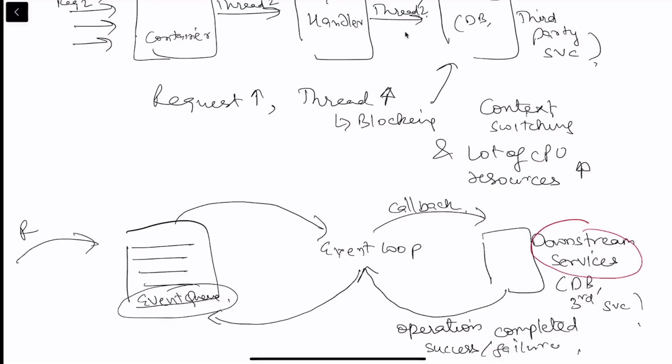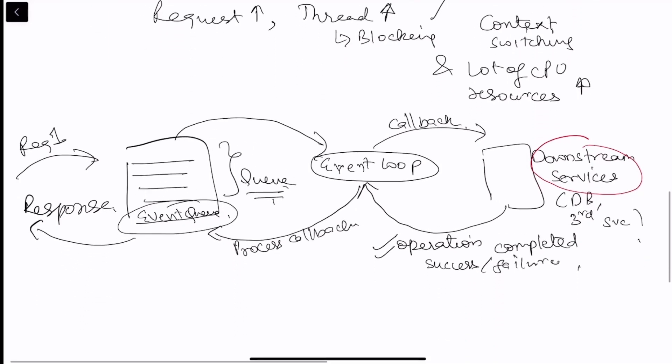And this event loop processes the callback. So the incoming request comes over here. This is my event loop, like the queue for the event loop. This event loop is picked up from here, called the downstream services with a callback. Once the operation gets completed, it goes back to the event loop which again processes the callbacks and sends the response back. What it results is that these tasks or the requests are handled or executed in a non-blocking manner. And which allows these other threads or the remaining threads to process the rest of the remaining requests.